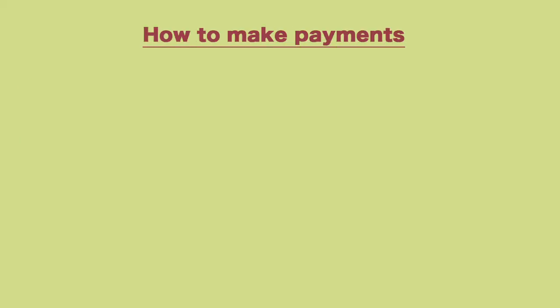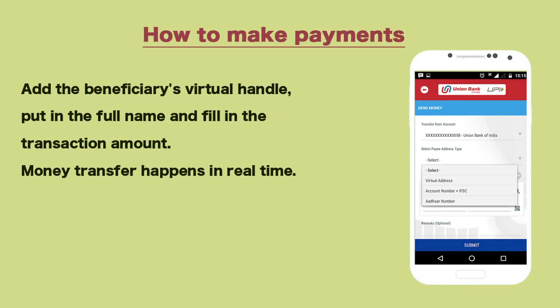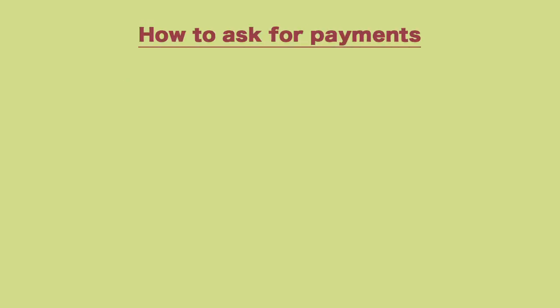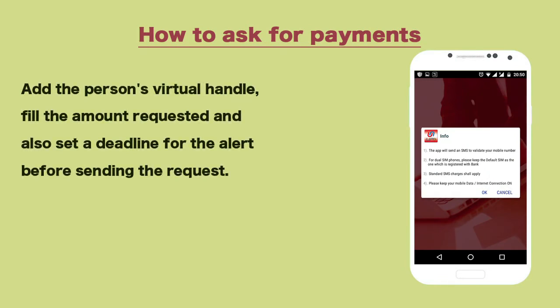How to Make Payments: add the beneficiary's virtual handle, put in the full name, and fill in the transaction amount. Money transfer happens in real time. How to Ask for Payments: add the person's virtual handle, fill in the amount requested, and also set a deadline for the alert before sending the request.